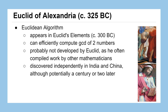In fact, this algorithm was probably not developed by Euclid. He was well known for compiling work by other mathematicians, and the algorithm was discovered independently in both India and China, perhaps a century or two later. It's a bit of a falsehood to say it truly belongs to Euclid, but what's important is that it's been around for over 2,000 years and still has great uses today.